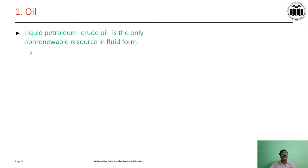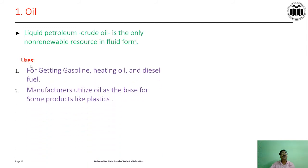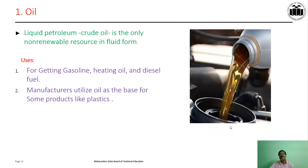Oil: petroleum or crude oil is the only non-renewable resource in fluid form. Uses of oil: for getting gasoline, heating oil and diesel fuel. Manufacturers also utilize oil as a base for some products like plastic. This figure shows how oil is used in a vehicle engine.